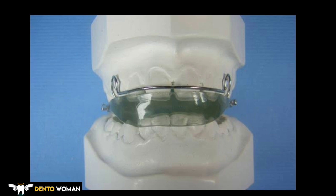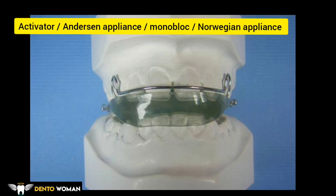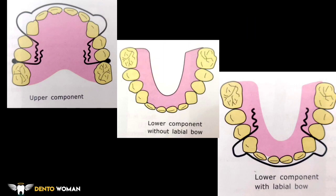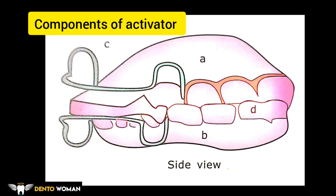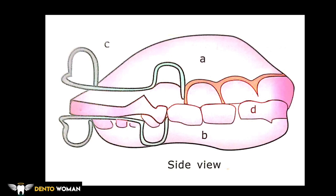This is an image of the activator, also known as the Anderson appliance, monoblock, or Norwegian appliance — all these names refer to this single appliance. The activator is essentially a unified appliance combining upper and lower Hawley appliances. The lower appliance may or may not contain a labial bow, and the retentive component is also optional. Components: A is the maxillary acrylic plate, B is the mandibular acrylic plate, C is the labial bow, and D is the acrylic bite joining the upper and lower components.